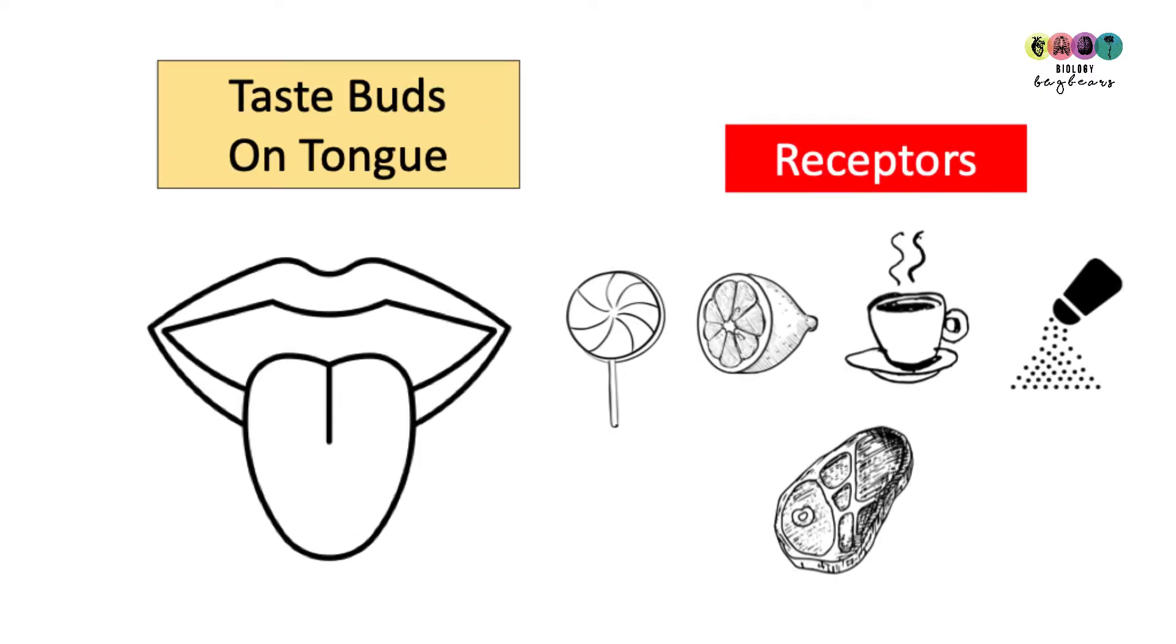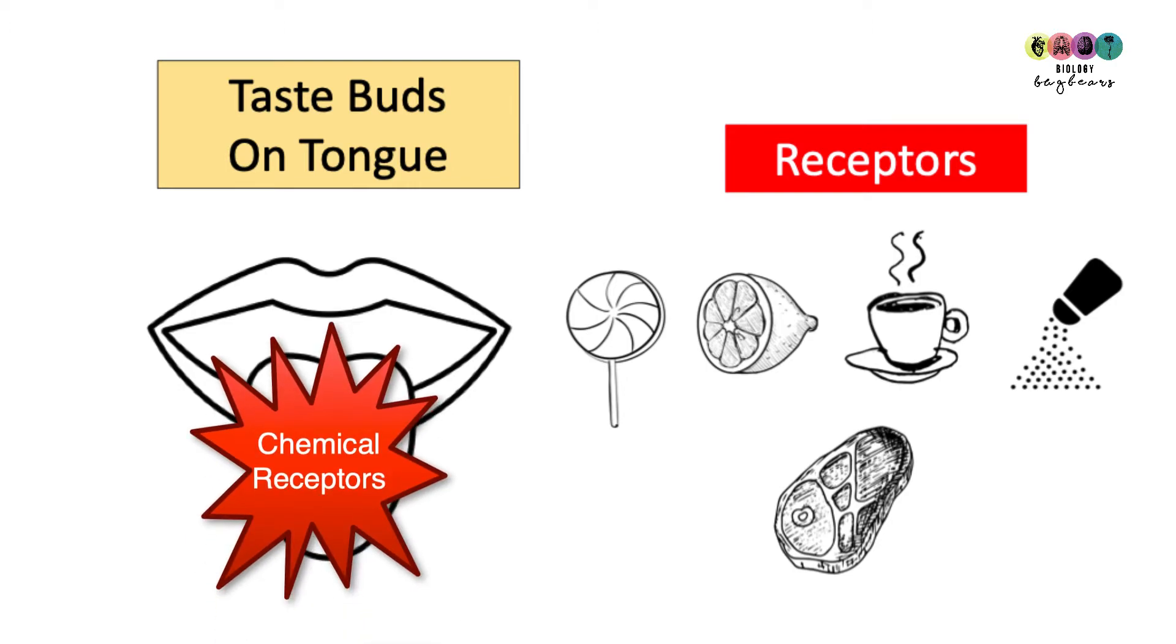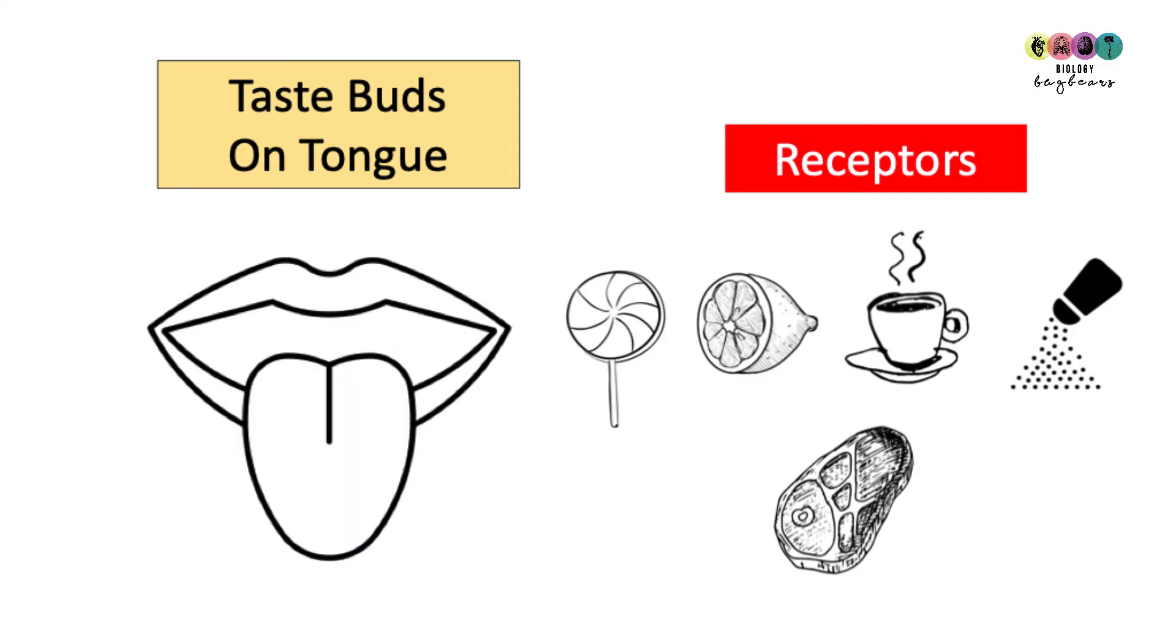We can detect these five flavours because of the taste buds, the organs of taste which are located on the tongue, but it's all to do with receptors that are found inside the taste buds. The receptors will react with or be stimulated by chemicals dissolved in the foods and different flavours will stimulate different receptors.